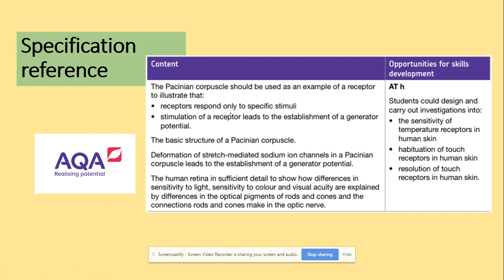That's really important because here we will be looking at mechanical pressure — mechanical pressure is the stimulus which will obviously be involved in the responses involved in the Pacinian Corpuscle, and stimulation of a receptor leads to establishment of a generator potential, or in other words, an action potential.